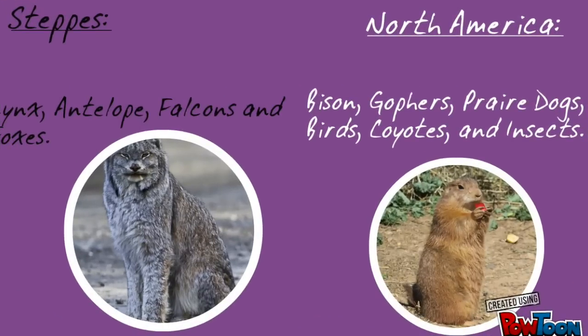There are different types of animals in each different part of the world. In the steppes it's very common to see lynx, antelope, falcons, and foxes. In North America it's very common to see bison, gophers, prairie dogs, birds, coyotes, and insects.